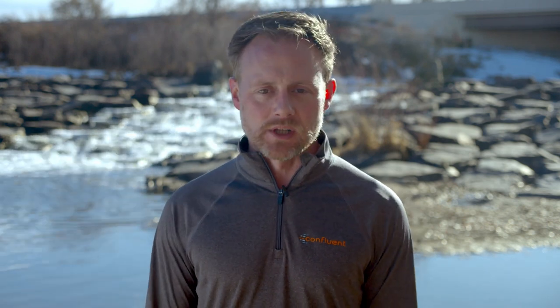Control Center understands how Confluent Platform works. This is not just metrics collection, not just getting some JMX mbeans — it's a purpose-built tool presenting the smartest possible interface so you can see what's going on and control what happens in your cluster. We also have an improved cluster overview screen and a new metrics dashboard showing everything you need to see at a glance: the status of brokers, replicas, partitions — everything you're probably going to want.